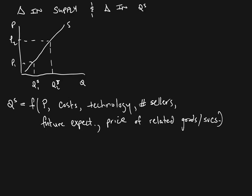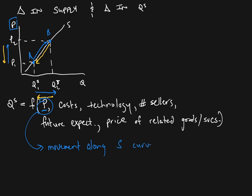Because price is already graphed on the supply and demand graph, a change in price is not going to cause a shift of the supply curve — price is already being taken into account. What happens is as price changes, we move from point A to point B on the supply curve. As price goes up, quantity supplied is going to rise as we move from point A to point B. And as price falls, we move from point B to point A along the supply curve and the quantity supplied is going to fall. So a change in price results in a change in quantity supplied — movement along the curve — not an actual shift of the curve, again because we've already got price plotted on the vertical axis.